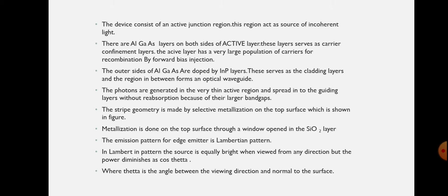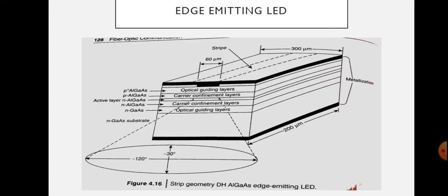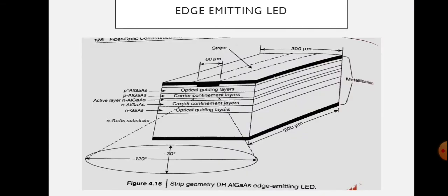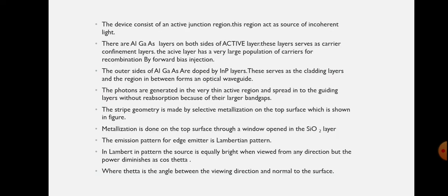There is a stripe geometry made by selective metalization on the top surface, as shown in the figure. This stripe is used for effective coupling with the optical fibers. The metalization is done on that structure.